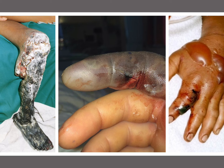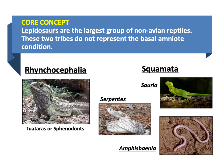Now, snakes may be dangerous, some of them anyway, but they only represent one of the many types of lepidosaurs. When we talk about lepidosaurs, we're talking about non-avian reptiles — the main reptile group that doesn't include birds, turtles, or crocodiles. We can basically describe lepidosaurs in two broad camps.